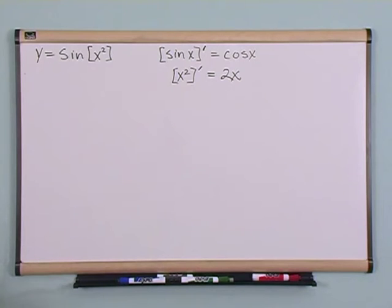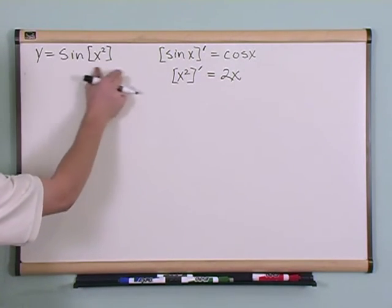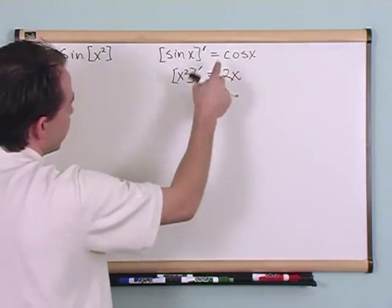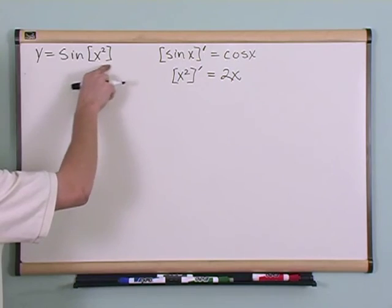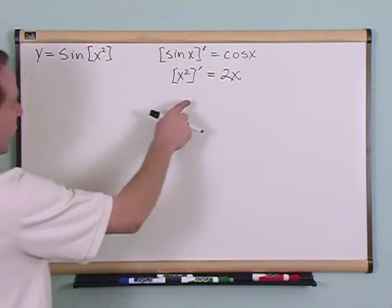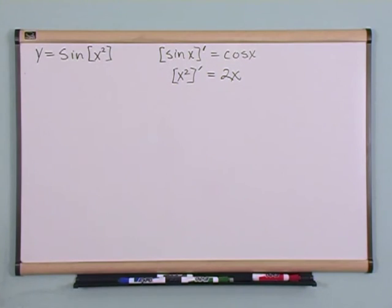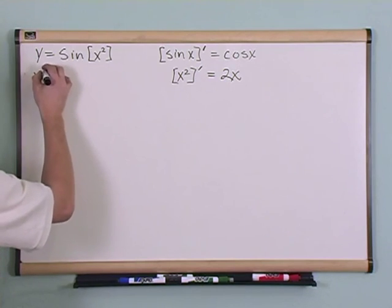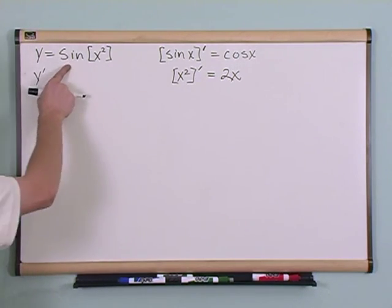So, if you were to guess, this function has something to do with sine. So the derivative is going to have something to do with cosine. And it also has something, this function has something to do with x squared. So the derivative is going to have something to do with 2x. The question is, how are they related to one another? I'm going to tell you the answer, but I'm not going to tell you why. And I think it will open the door. The derivative of this...